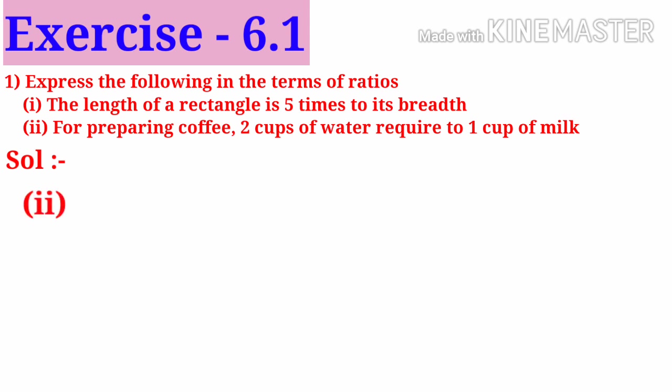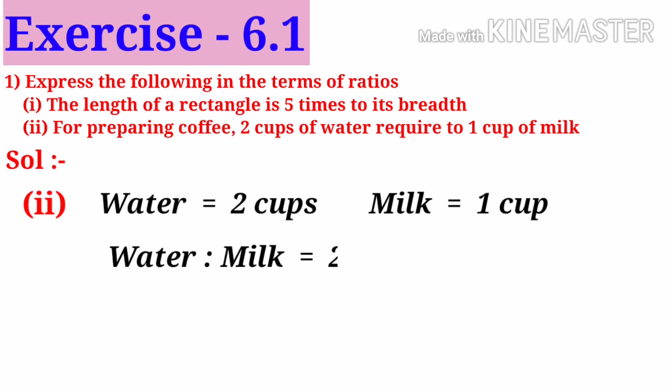For preparing coffee, 2 cups of water required to 1 cup of milk. So here water contains 2 cups and milk 1 cup. So the ratio between water and milk is: water to milk equals 2 cups to 1 cup. Cups get cancelled, so the ratio is 2 is to 1.